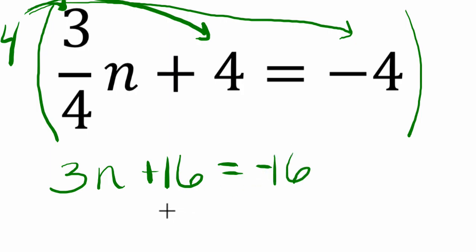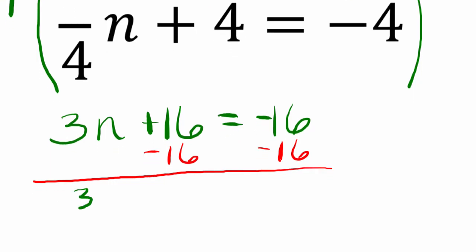Now this is a little bit more manageable. I would subtract by sixteen on both sides. And then I have three-n, plus sixteen minus sixteen is zero.